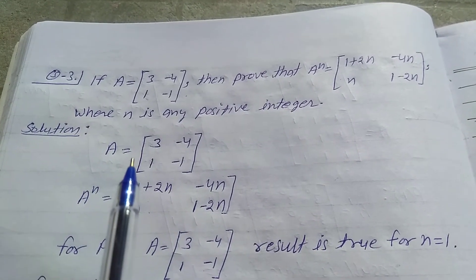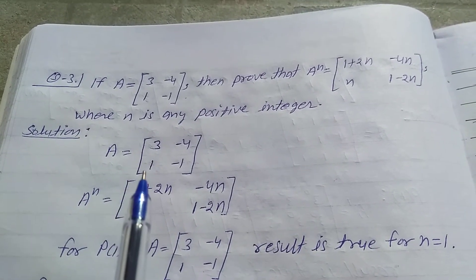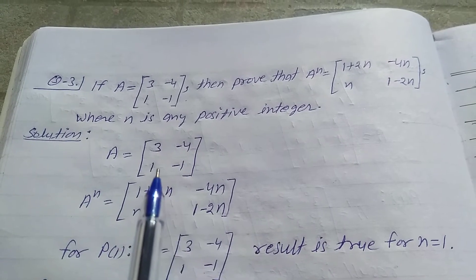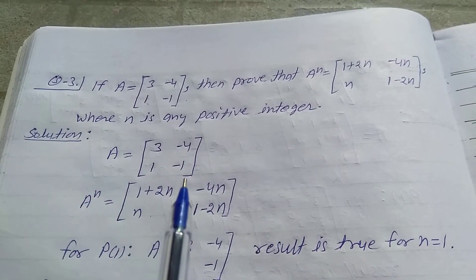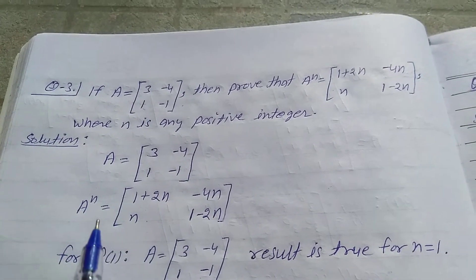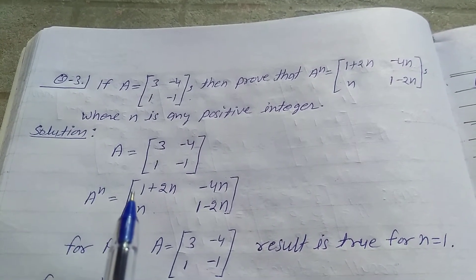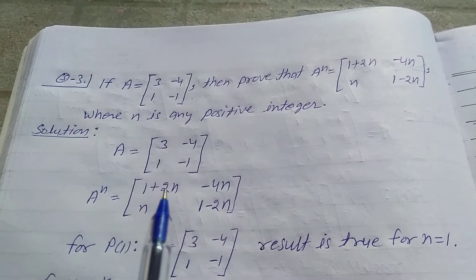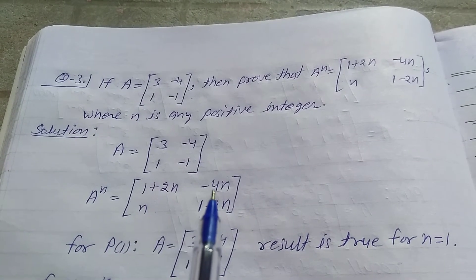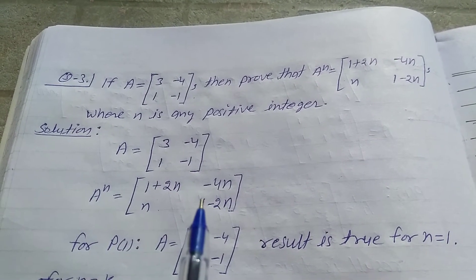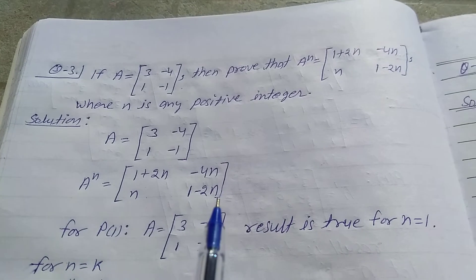First, take matrix A is equal to matrix [[3, -4], [1, -1]], and take A power N matrix is equal to matrix [[1+2N, -4N], [N, 1-2N]].